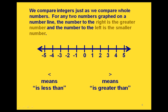When we're comparing integers, we do the same as we do when we compare whole numbers. If we look at two integers graphed on a number line, the number to the right is the greater of the two numbers, and the number to the left is the smaller of the two numbers.